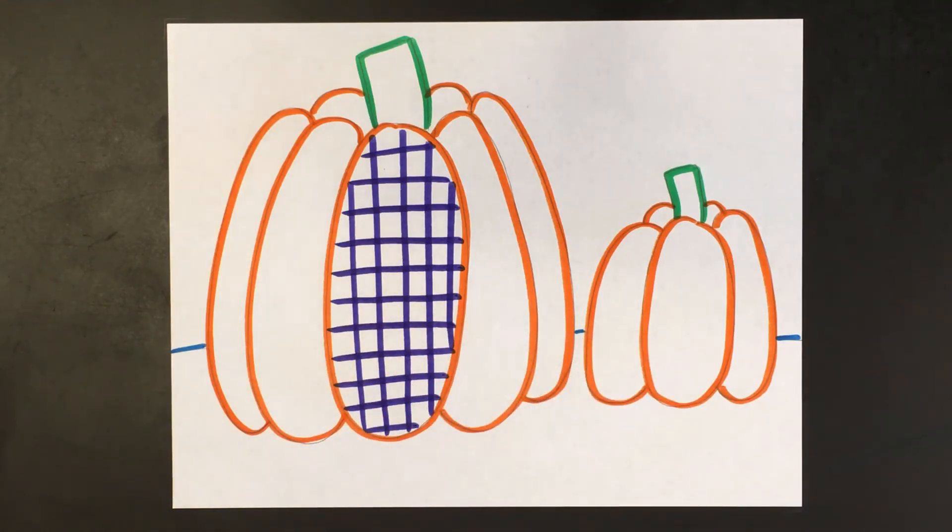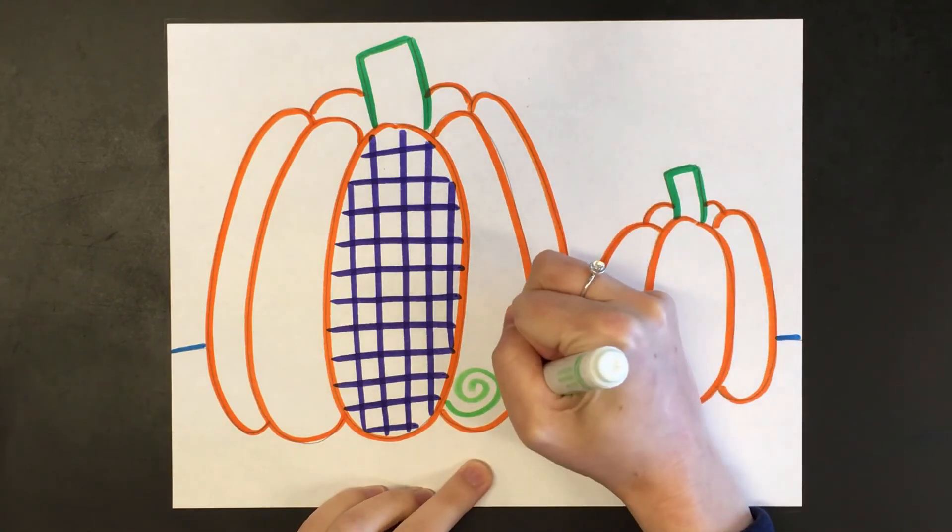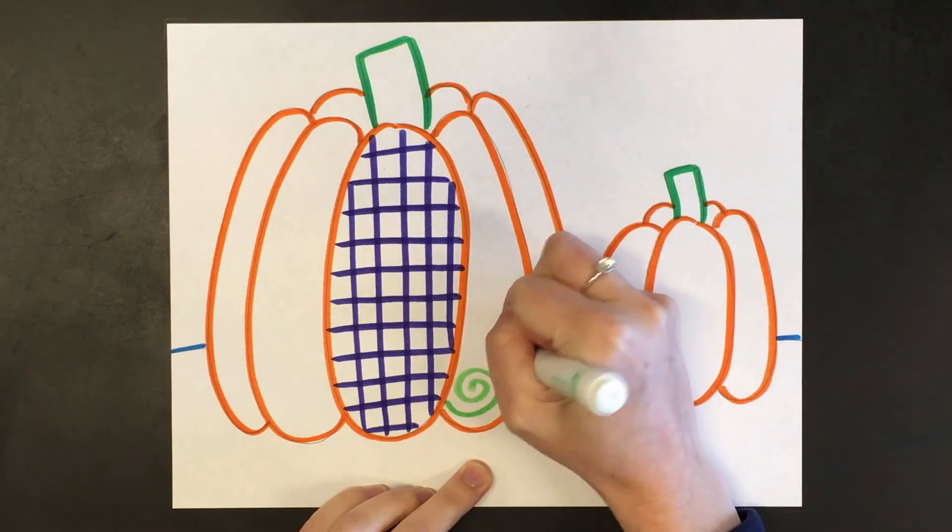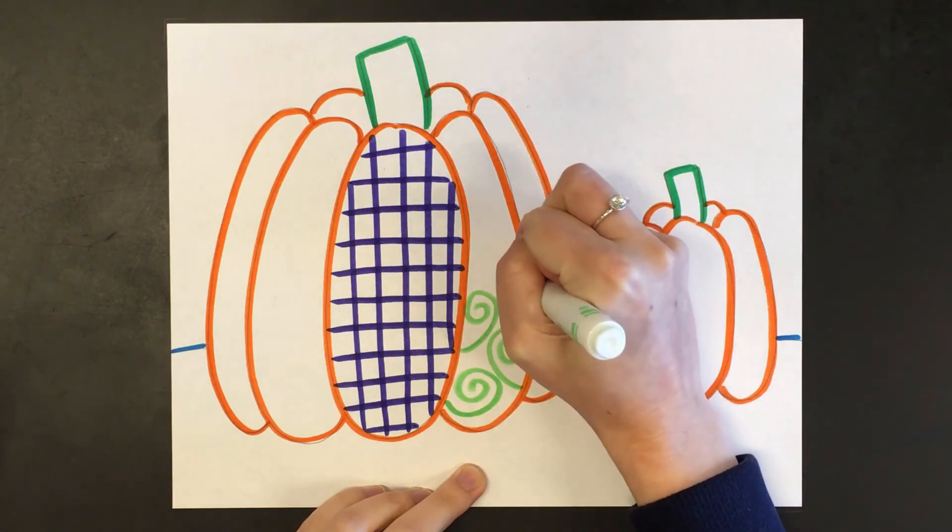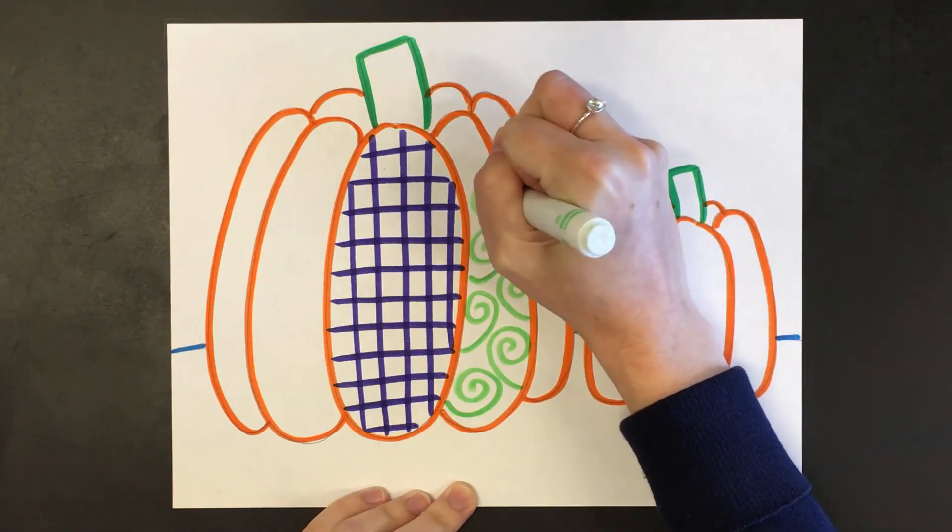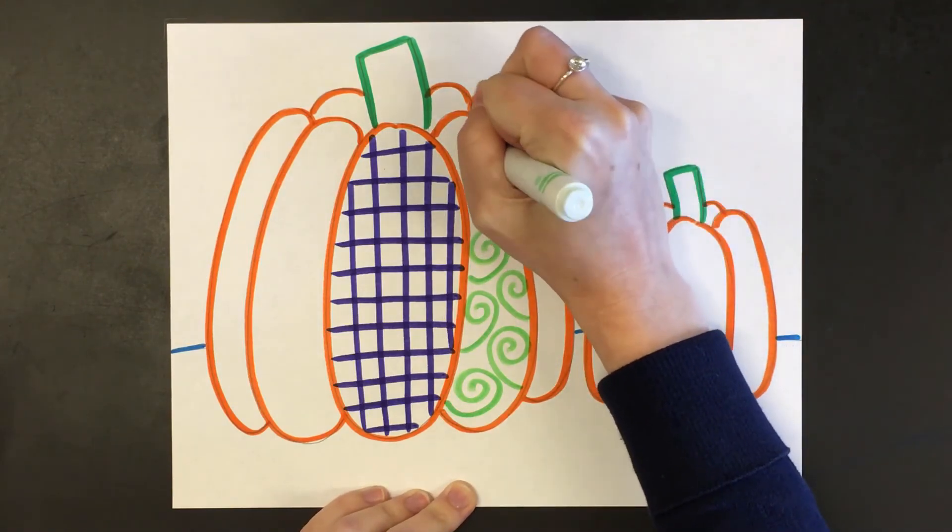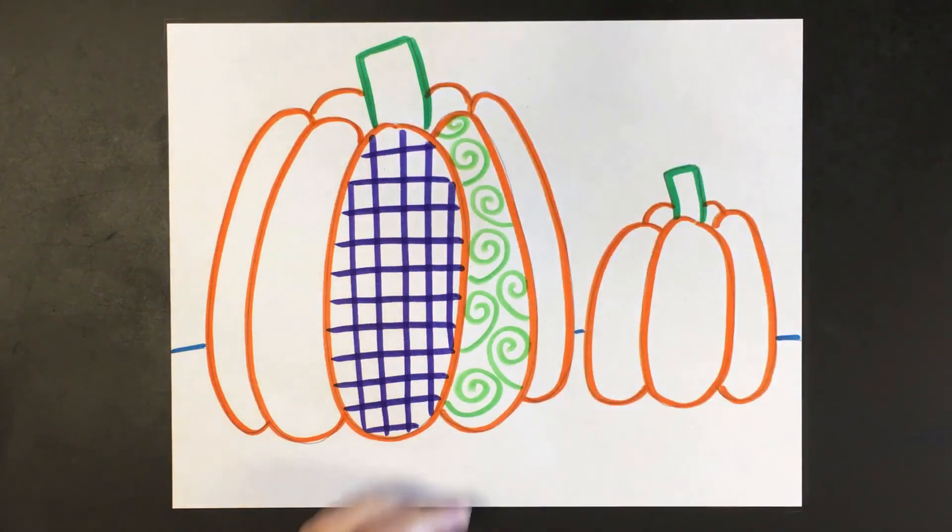And then I'm going to pick a different color and I'm going to do the next section of my pumpkin a different color for my pattern. I think for this part I will do spirals. So I will continue to add a different pattern and a different color to each section of my pumpkin, and when I'm finished with that I will show you the final step.